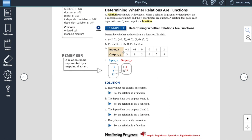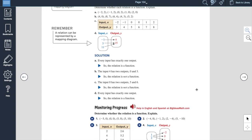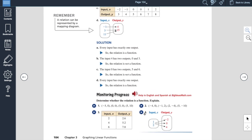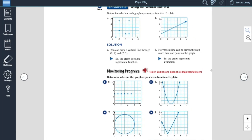But notice on C here, your input of 0 gets mapped to 5 and 0 gets mapped to 6. So an input of 0 has two different outputs. So that is not a function. And you can go through the monitoring progress. They give you a couple other examples there. Please check those out.